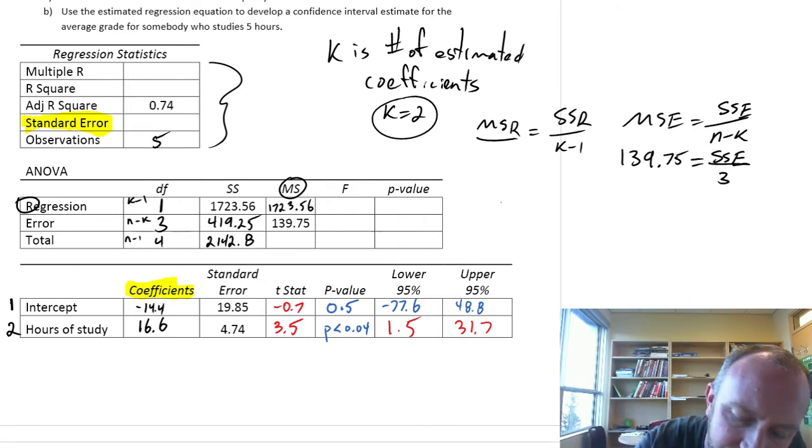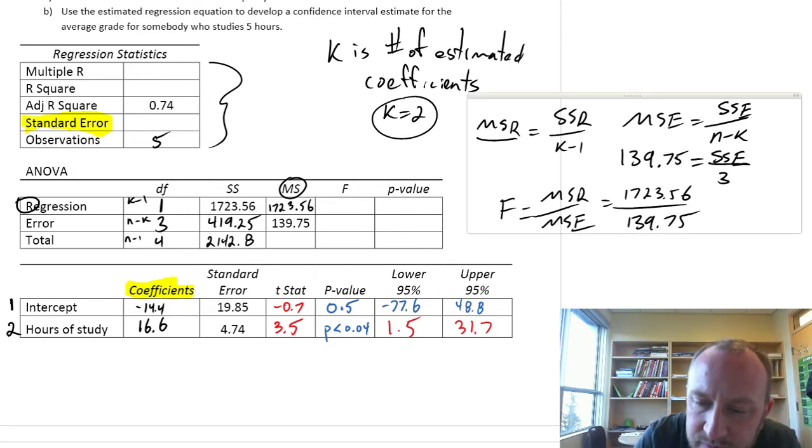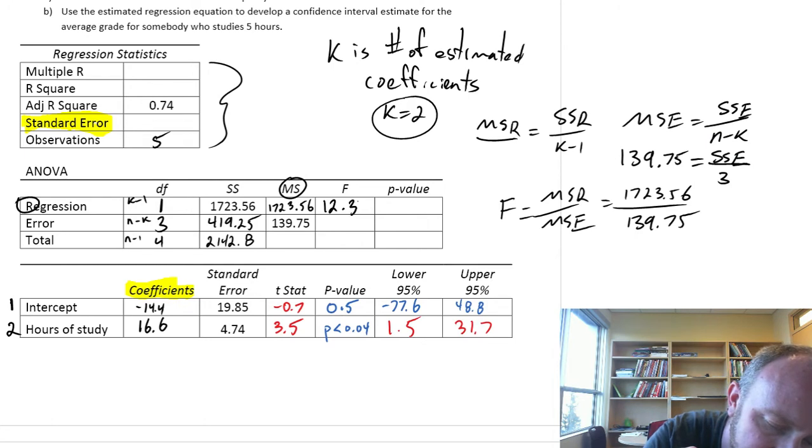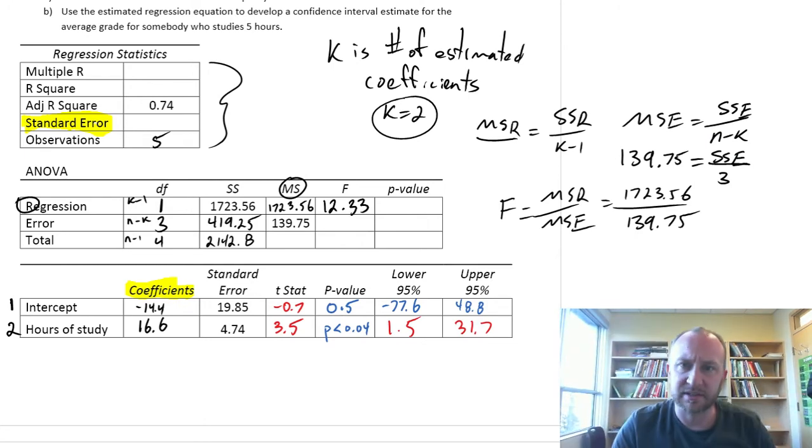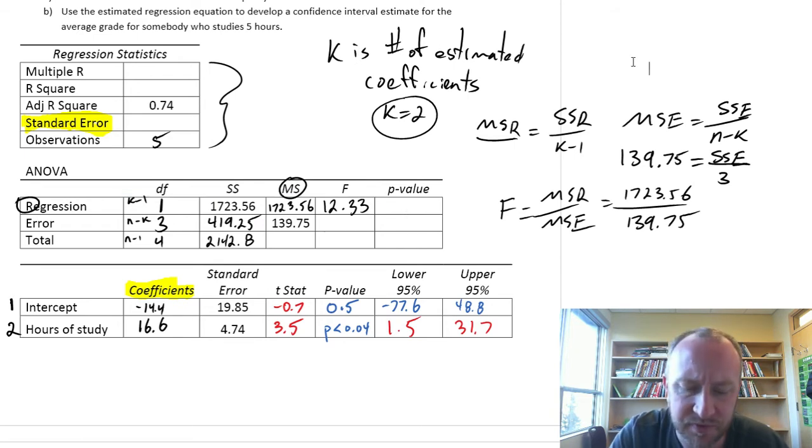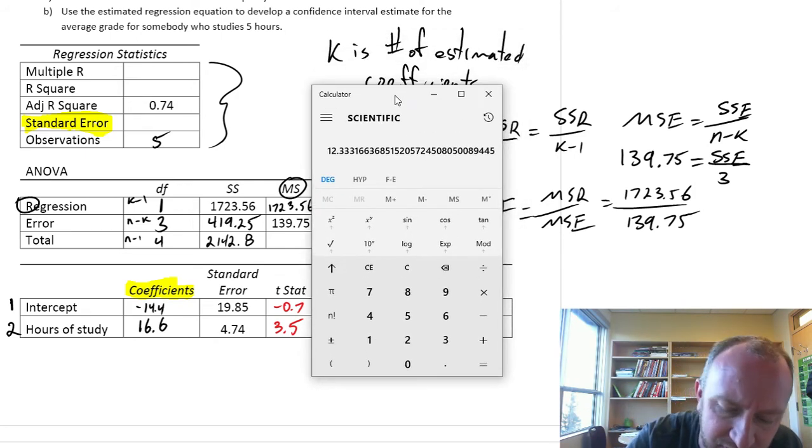Okay, good. F statistic, same as always, mean squared regression over MSE. So this is going to be 1723.56 over 139.75. Okay, so this can stay there. 1723.56 divided by 139.75. So 12.3. Okay, well that's, that all sounds about right. And we have actually an interesting relationship between our T statistic and our F statistic in a simple linear case. I'll show you that. I'll show you why in a second. But look at our T statistic down here is 3.5. Just for fun.